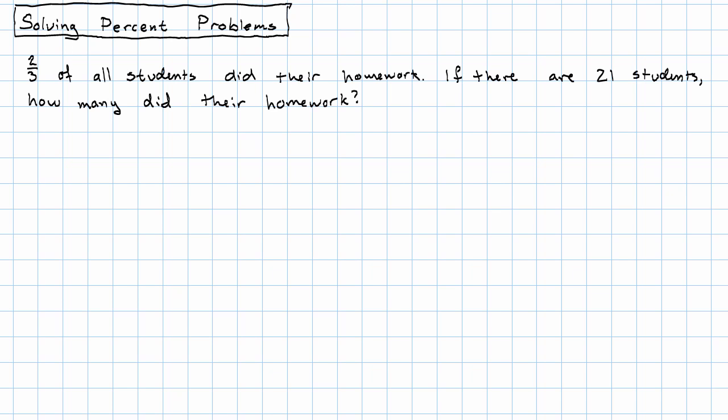That two-thirds of all students did their homework. If there were 21 students, how many did their homework? Well, two-thirds of all students, that means two-thirds times the number of students.